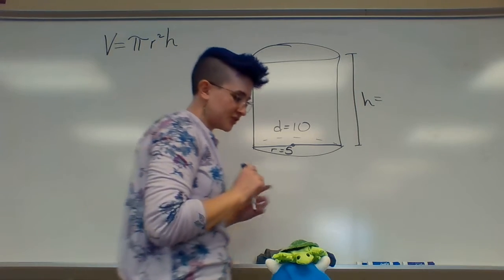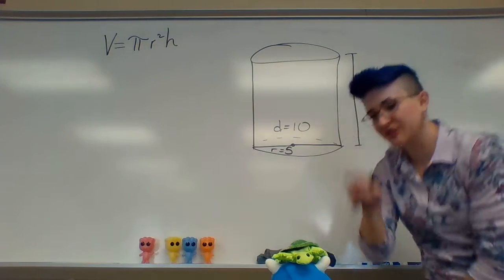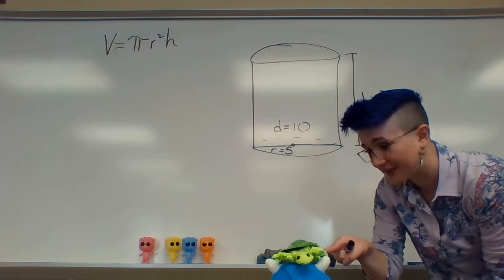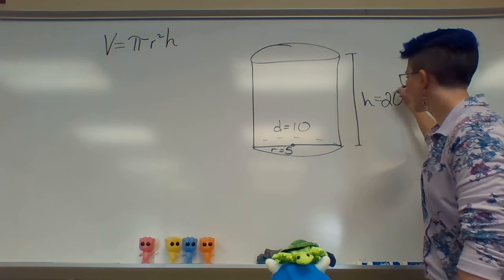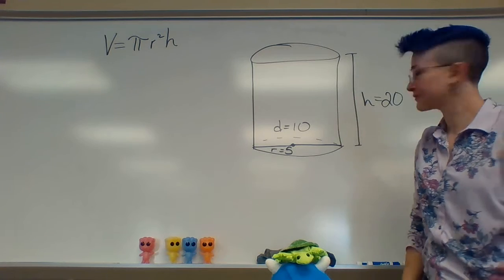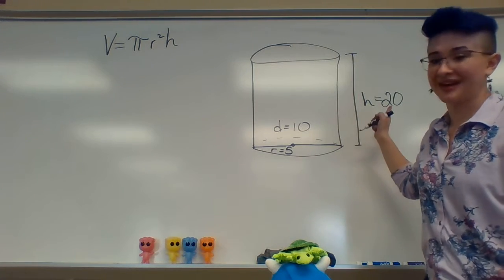The next thing you do is you look at the side of the jar, starting from the bottom or the top of your choice. You're going to count how many gumballs roughly up there is. So let's say there's about 20 gumballs up. My radius is 5 gumballs. My height is 20 gumballs.